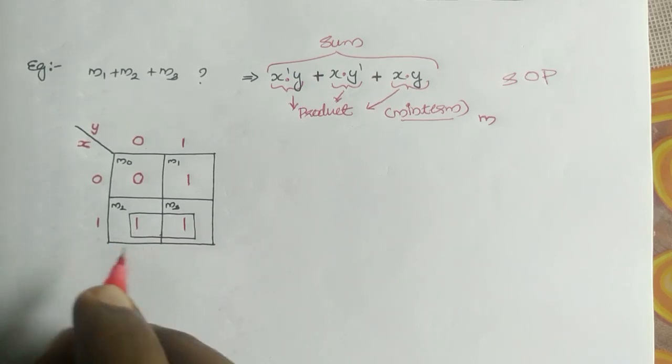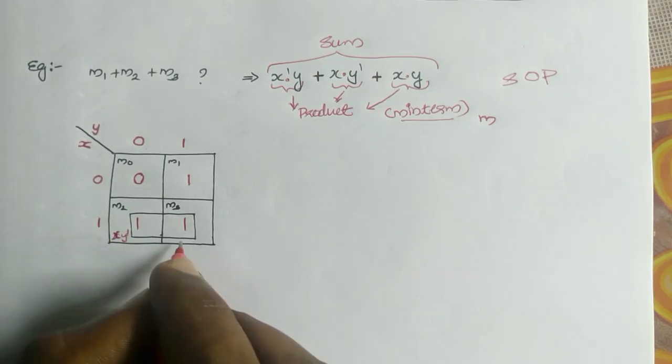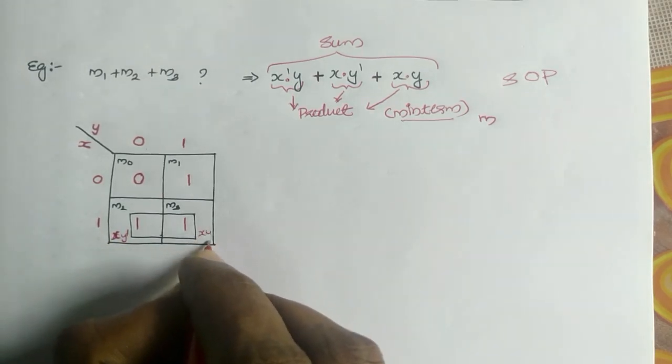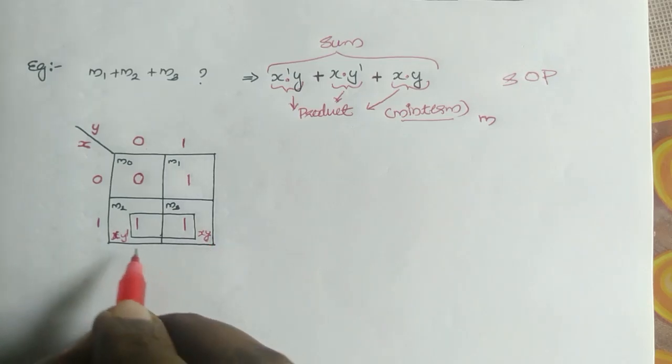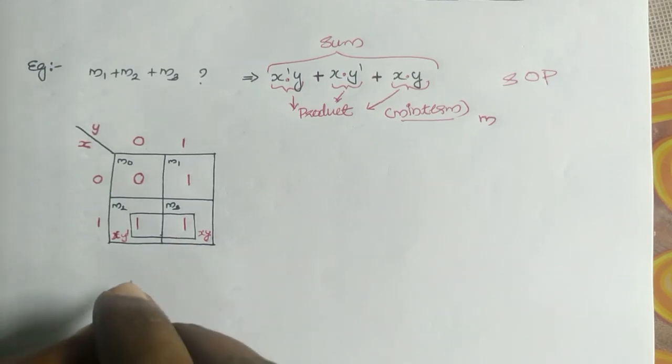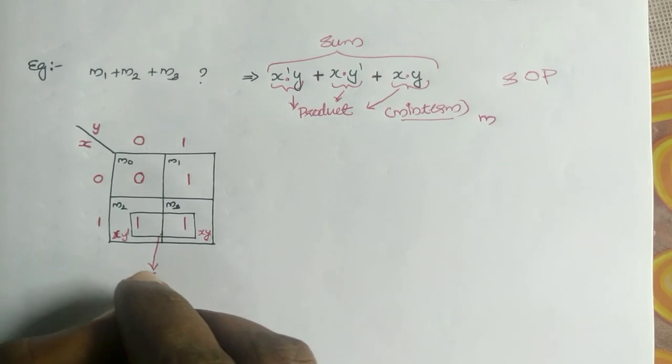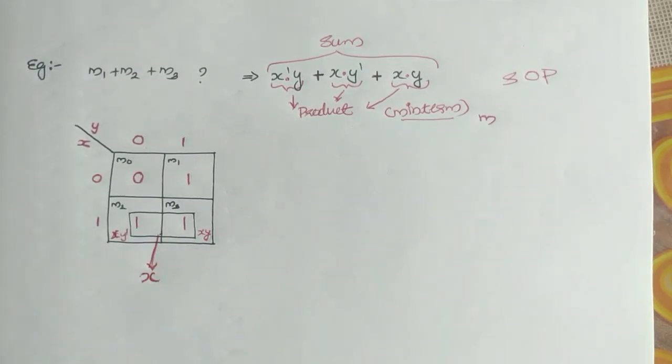This cell representing M2 is X, Y bar, and this cell represents X, Y. That means Y is changing from 0 to 1, but X does not have any change. So we are taking the element that does not have any change. So here we get X.